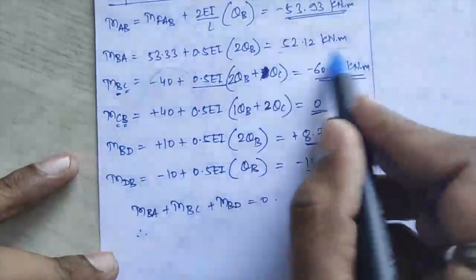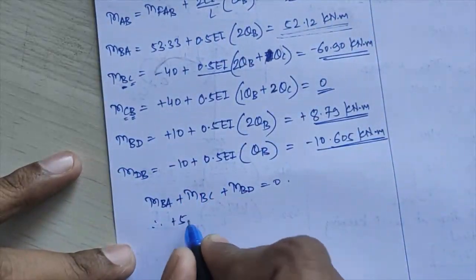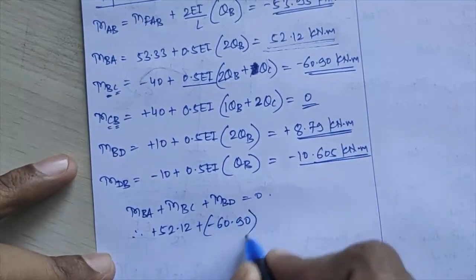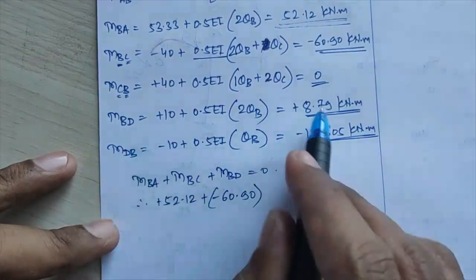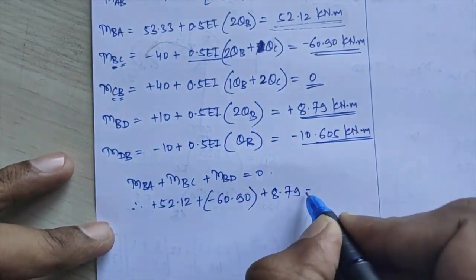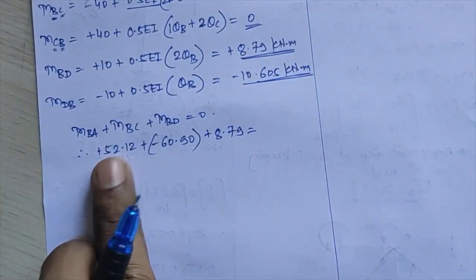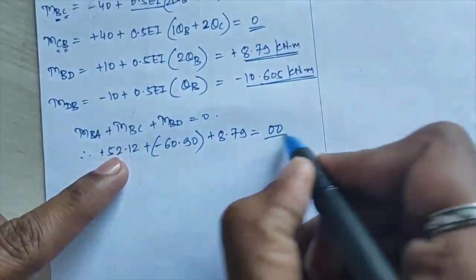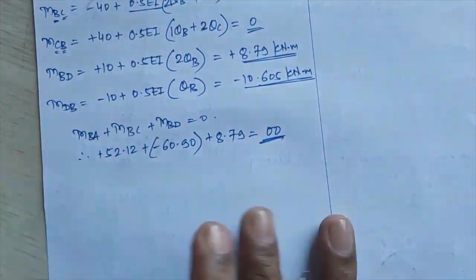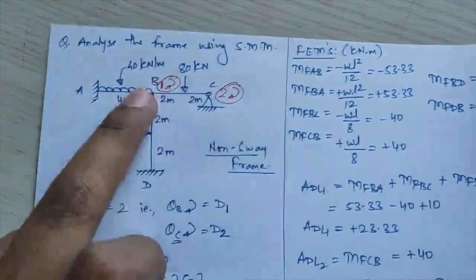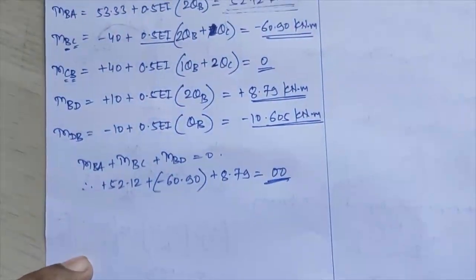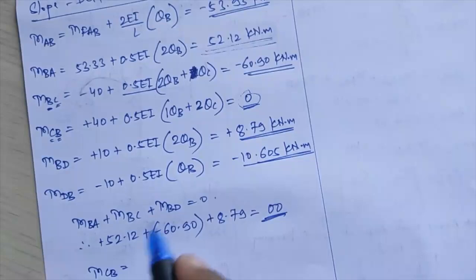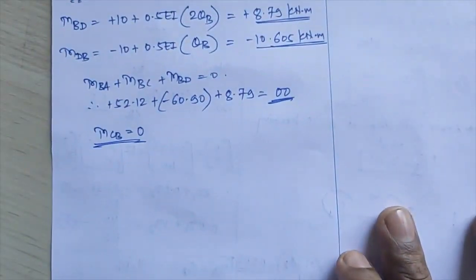Checking equilibrium: at joint B, MBA + MBC + MBD = 52.12 + (−60.90) + 8.79 ≈ 0 ✓. At joint C, MCB = 0 ✓. Both equilibrium conditions are satisfied, confirming the solution is correct.